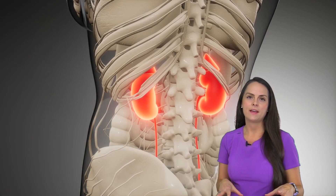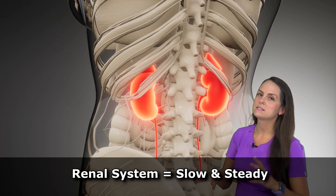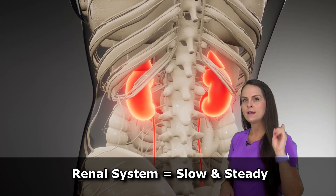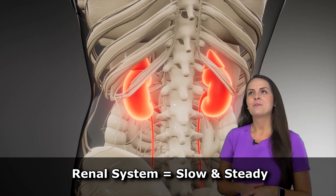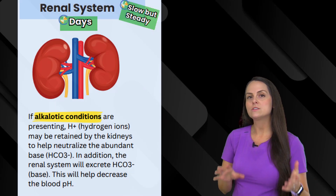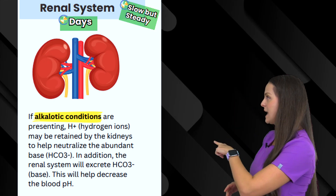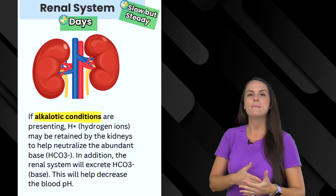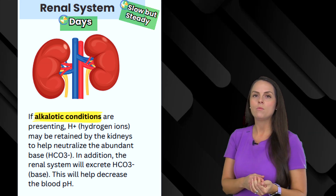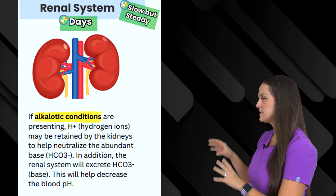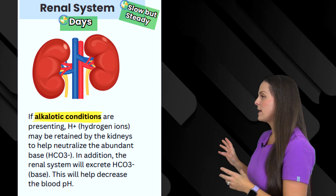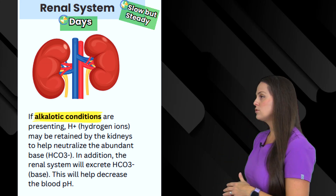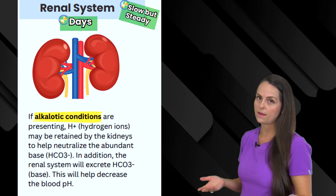Then the renal system comes into play. I like to think of the renal system as the slow and steady system — it's like the turtle: slow, but once it gets going, it does its thing. What's going to happen is it will help retain hydrogen ions. We need those hydrogen ions because they make things more acidic, which is really needed in metabolic alkalosis. Those hydrogen ions will neutralize the bicarbonate. Plus, the kidneys can start to excrete extra bicarb, which will help lower that blood pH.